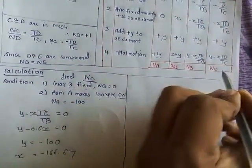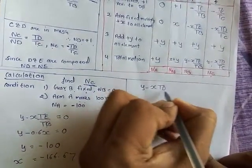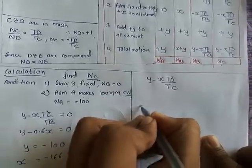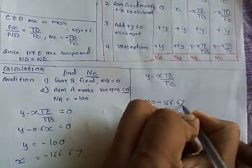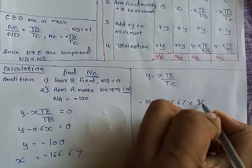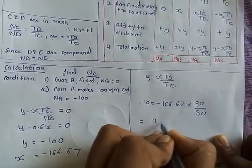Find what we need to do, NC. NC means Y minus X, TD upon TC. All the values are Y minus 100, X value is 166.67, TD is 90, TC is 30. This gives you a value of 400 RPM.